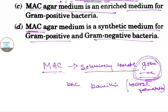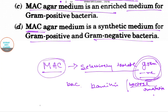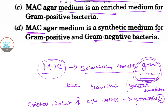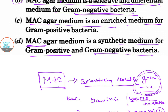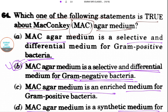Second, lactose fermentation is used, and crystal violet and bile salts inhibit the growth of gram-positive organisms. So the selection and isolation of gram-negative bacteria is done by this agar media. Therefore, option B is the correct answer for this question. Thank you for watching.